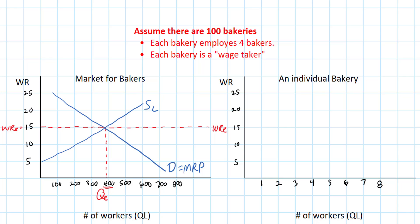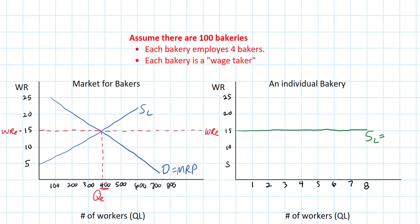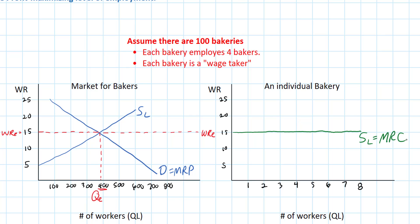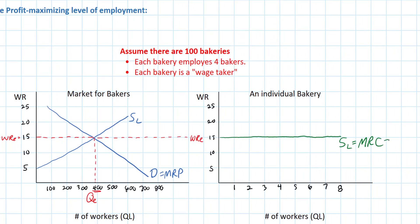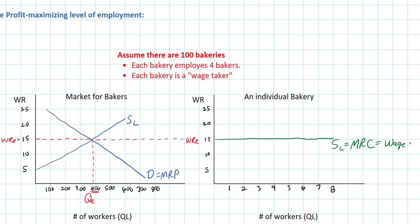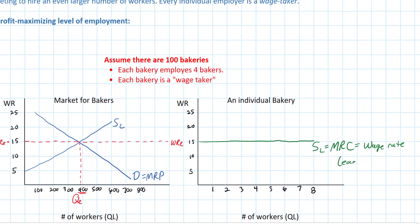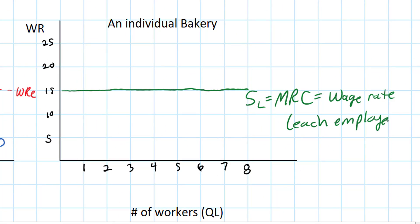Every individual bakery can hire as many bakers as they want at the equilibrium wage rate of $15. If a bakery wanted to hire a fifth worker, it would not have to raise the wage rate. The supply of labor for the individual firm is determined by the marginal resource cost. The bakery can hire additional workers at a wage rate of $15 each. In a perfectly competitive labor market, the marginal resource cost equals the wage rate because each employer is a wage taker.